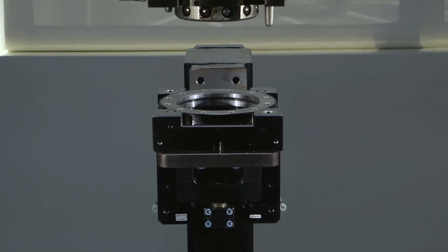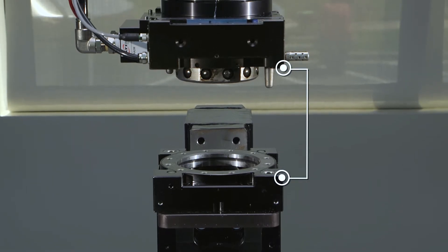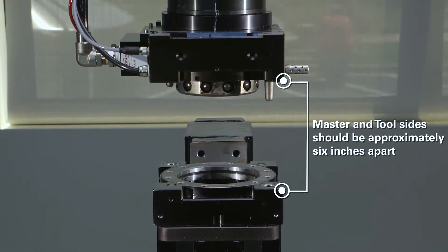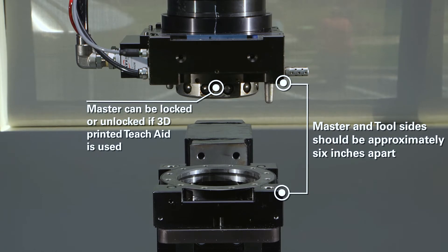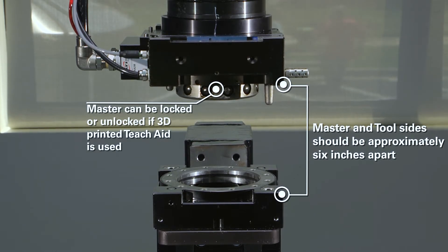Start with the tool side placed in the tool stand. The master side should be approximately six inches above the tool side. If using the 3D printed version of the T-Jade, then it does not matter if the master side is locked or unlocked.